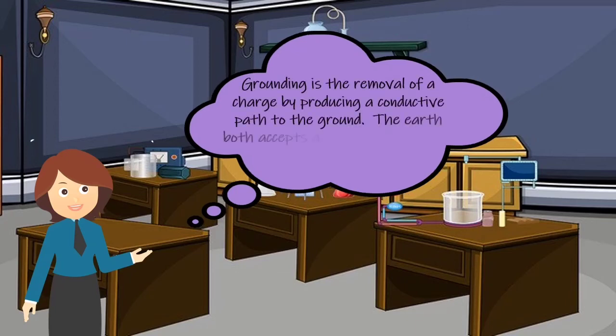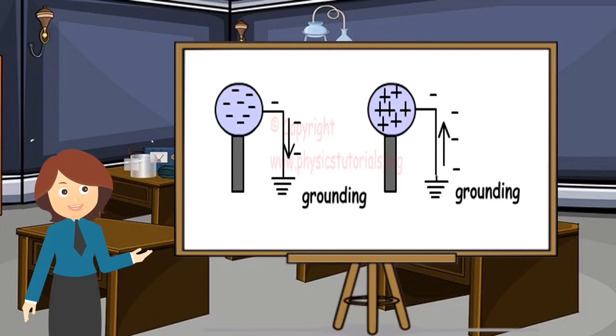Grounding is the removal of a charge by producing a conductive path to the ground. The earth both accepts and gives electrons to neutralize objects. When a negatively charged object is grounded, in order to neutralize the object, some of its electrons move to the ground. In a similar way, when a positively charged object is grounded, some of the electrons from the ground are transferred to the positively charged object in order to neutralize it.